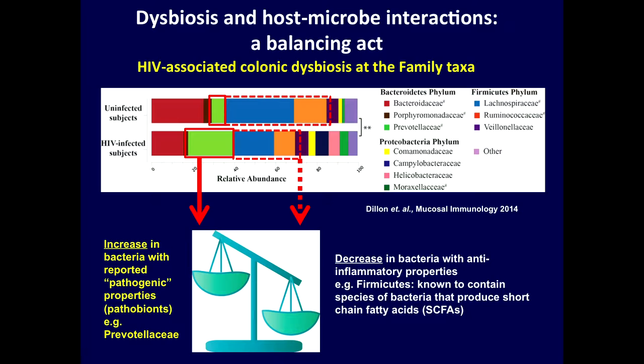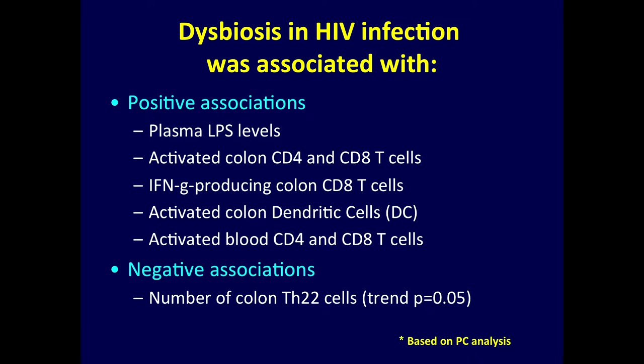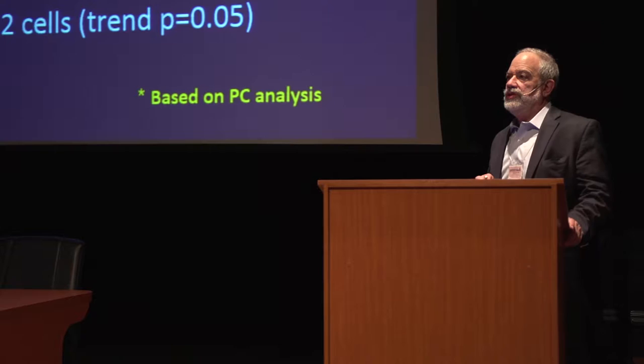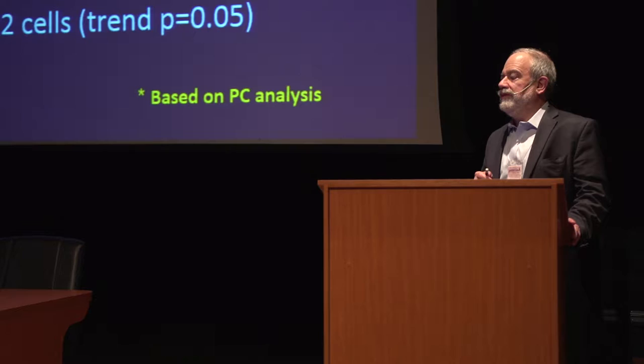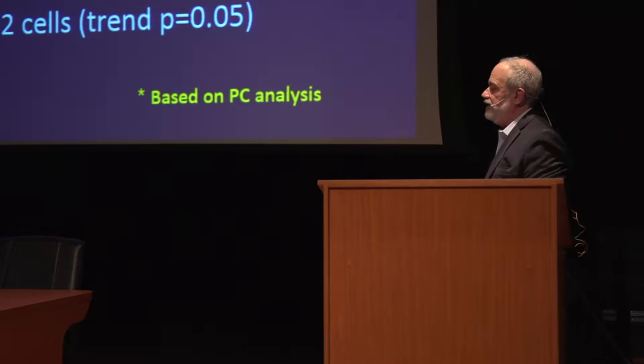We also looked at associations with immune parameters. We showed a strong positive direct correlation with plasma LPS levels, activated CD4 and CD8 cells within the colon, increased interferon gamma colonic CD8 cells, activated colonic dendritic cells, and activated blood CD4 and CD8 T cells. We also showed negative associations with colonic TH22 cells, which trended at p=0.05. There was more activation and loss of important TH22 cells — cells important in maintaining gut mucosal barrier integrity through production of IL-22. This was based on principal component analysis.